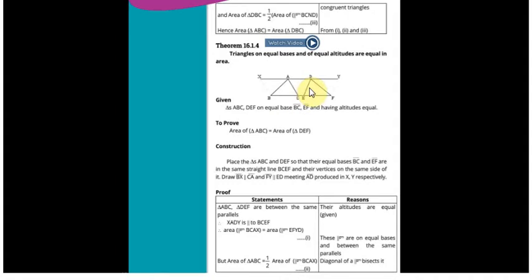To humein yeh prove karna hai ke area of triangle ABC is equal to area of triangle DEF. To sabse pehle hum kya karein ge ke in dono triangles ko ek straight line pe place kar dein ge.